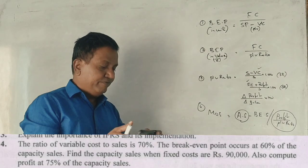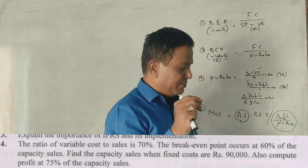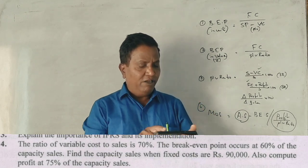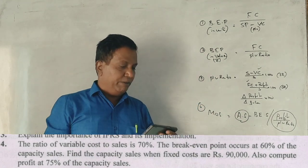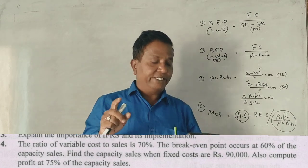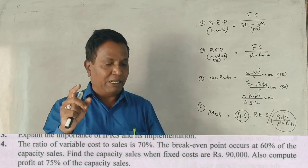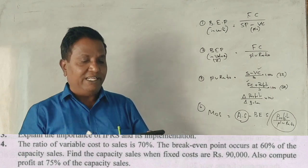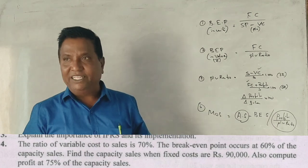Students of Bangalore Central University, City University, 1st year MBA. The ratio of variable cost to sales is 70%. The break-even point occurs at 60% of capacity sales. Find the capacity sales when fixed costs are 90,000, and also compute the profit at 75% capacity of sales.